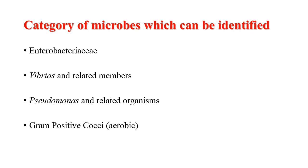In this software we cannot identify all categories of bacteria. Here we can only identify four major categories: Enterobacteriaceae, which is the most important group; Vibrio and related members; Pseudomonas and related organisms; and Aerobic Gram-positive cocci. Bacteriology is much wider than this, so these are just a few microorganisms which can be studied by this software. You can use other software available online for a larger number of bacteria.